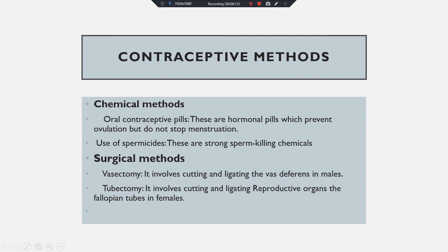The second method is surgical methods, in which surgery is used to prevent pregnancy. The first one is vasectomy, used in males — here the vas deferens is cut and tied, so fertilization cannot occur. Tubectomy is performed in females — here the fallopian tube is cut and tied, so fertilization will not occur. So the first method is chemical and the second method is surgical.